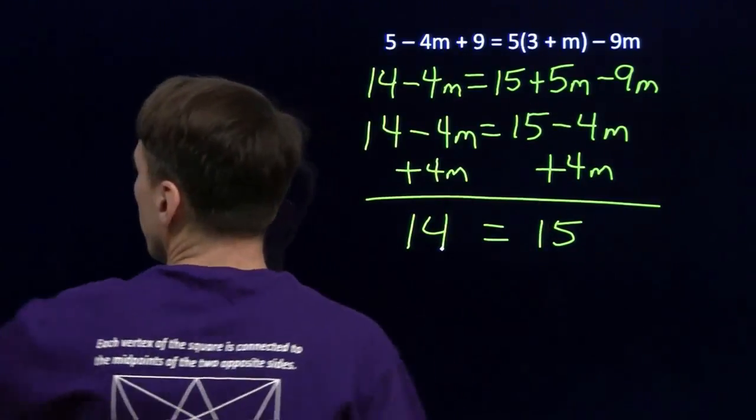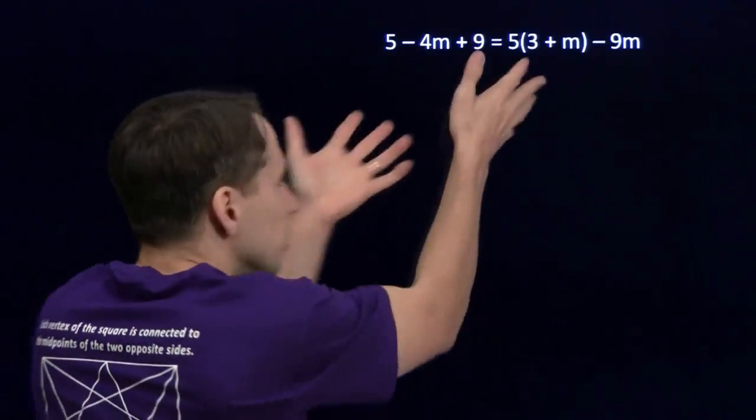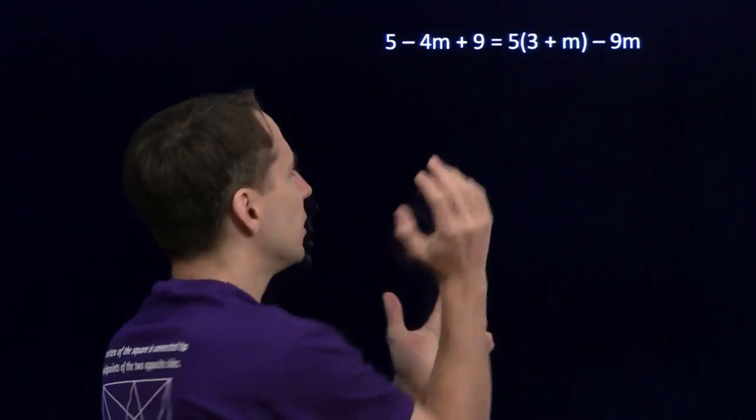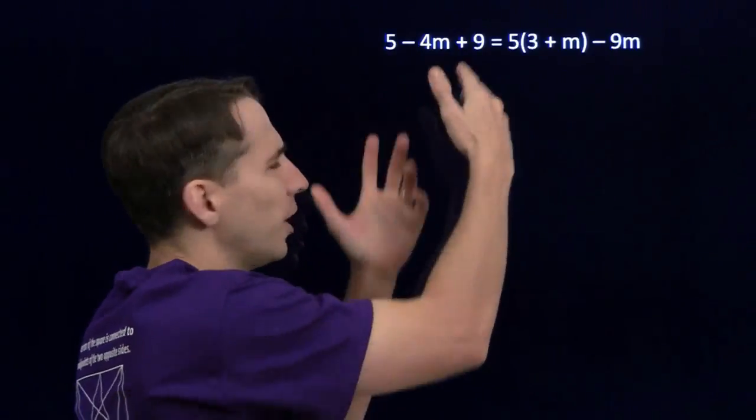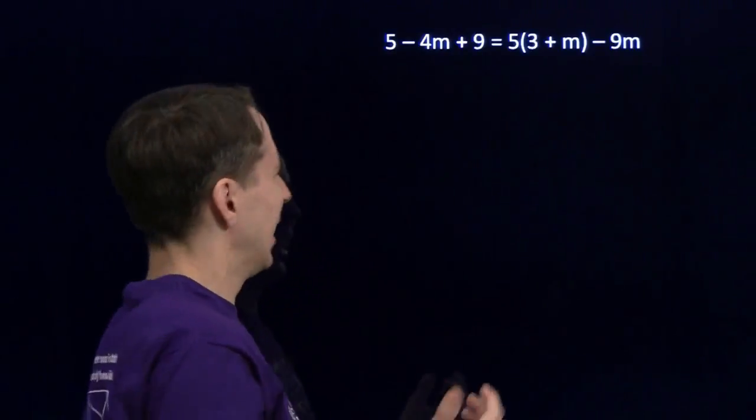Forget it. Let's do this. All right, I'm going to start the same equation here. I'm going to pick some values of m, stick them in there, and try to figure out what's actually going on. Because when I simplified this equation, I got 14 equals 15, and that's not right.